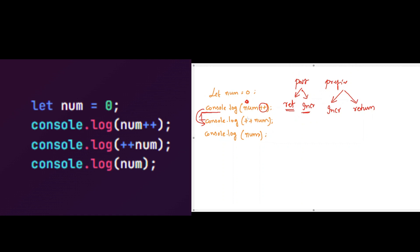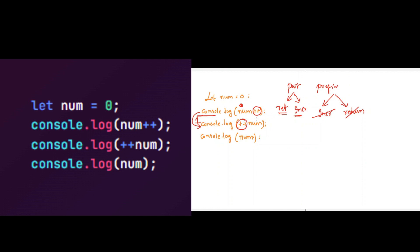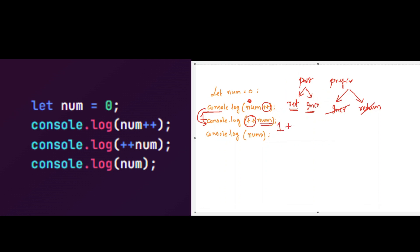In the third line, we are using prefix operator. This prefix operator will increment the value and then return it. What is the current value of num here? It is 1. So 1 will be incremented by 1. The current value of num will become 2 here. This will be returned, so console.log will log 2 into the console.